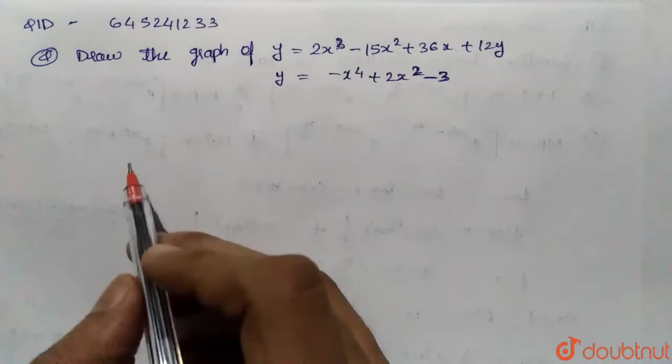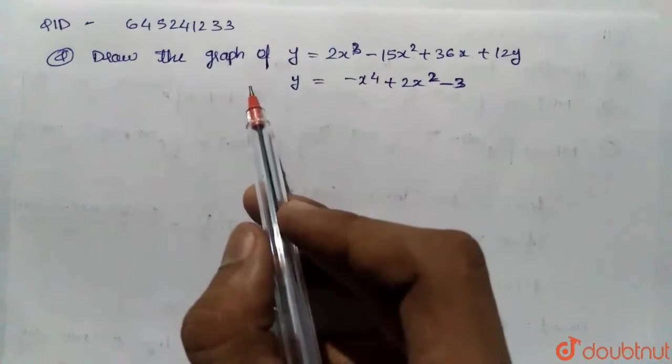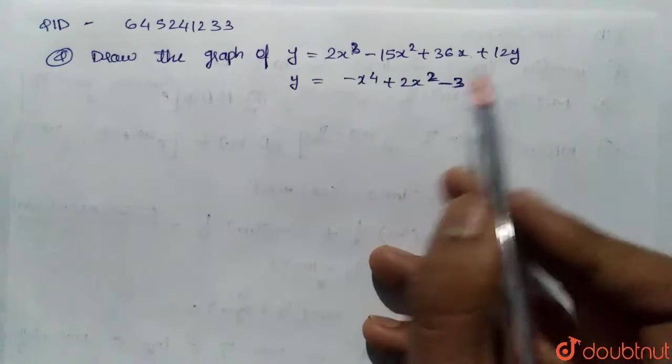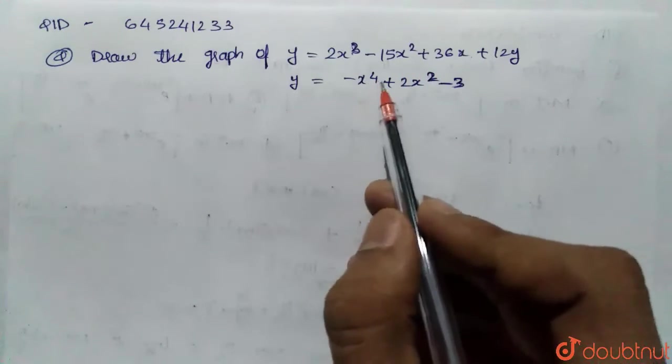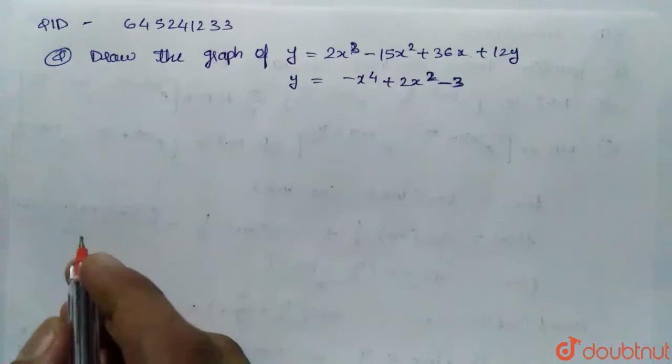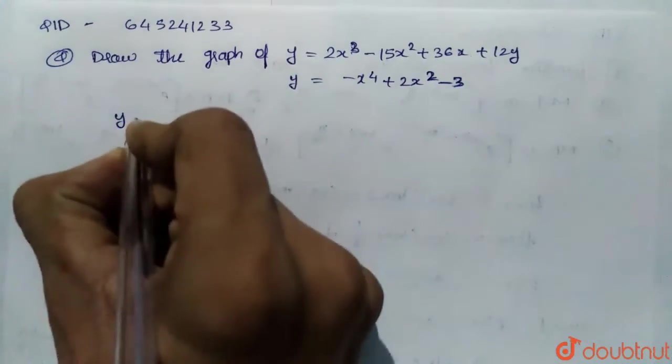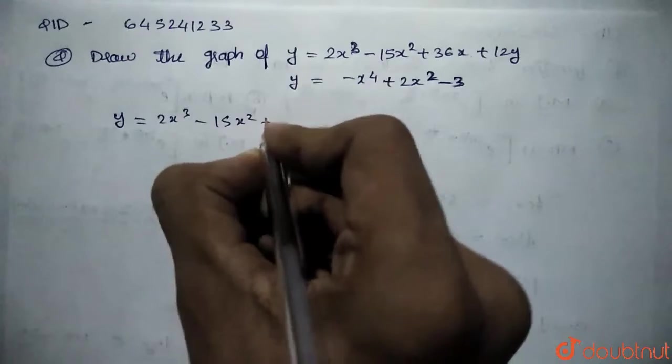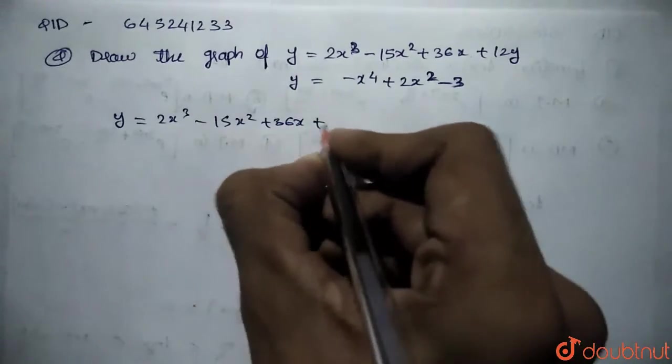Hello guys, so the question is, draw the graph of y = 2x³ - 15x² + 36x + 12y and also y = -x⁴ + 2x² - 3. So, considering first equation, y = 2x³ - 15x² + 36x + 12y.